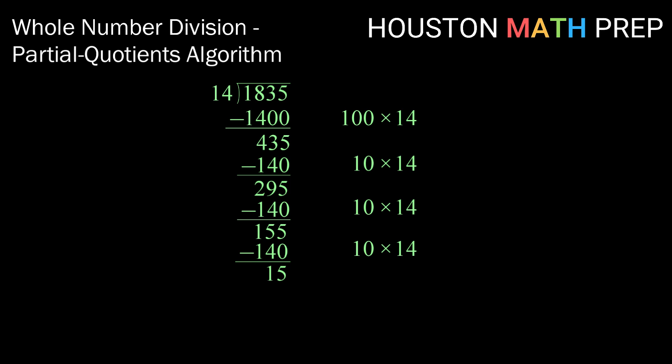Now our result is 15. Now we can subtract 1 times 14, leaving a result of 1. There are no further multiples of 10 that we can take away, so this tells me we're going to have a remainder of 1. To get the whole part of our division, we'll add up how many multiples of 14 we subtracted, which is 100 plus 10 plus 10 plus 10 plus 10 plus 1, or 131. So our answer is 131 remainder 1.